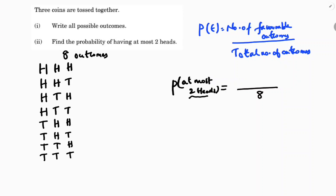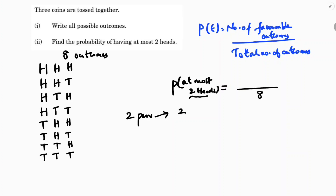For example, if a child is asked to get at most two pens, he can get two pens, one pen, or even no pen at all. At most means he should not cross that number. So here we should not get more than two heads.